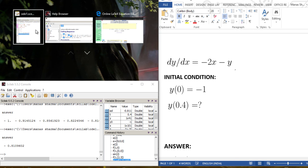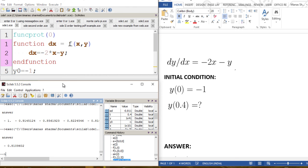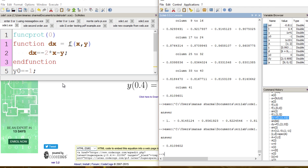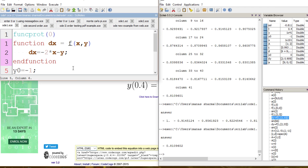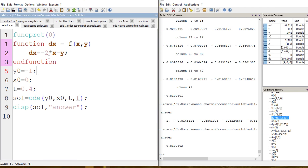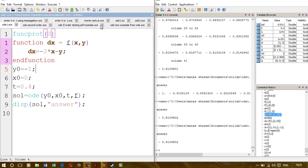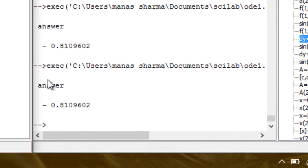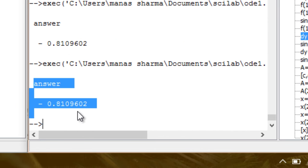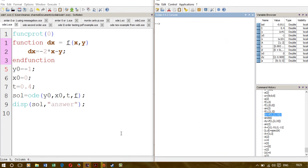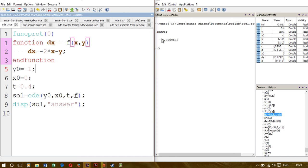Let me just arrange it in a better way. Here's my console and here is my program. You can run this program by clicking right here, which would save and execute, and as you can see I get -0.8109602 as the answer.